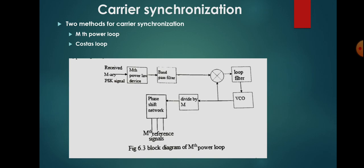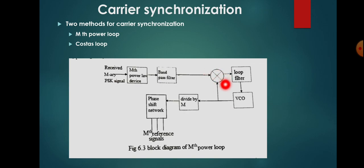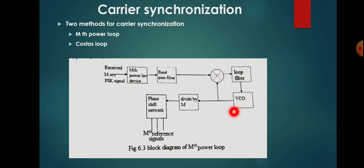Let us discuss first about the Mth power loop. We will be explaining it with the help of an M-ary PSK signal reception. The received M-ary PSK signal is given to the Mth power loop device, then to a band pass filter, then to a phase locked loop. This combination forms the phase locked loop, containing a multiplier acting as a phase detector, a loop filter which is a low pass filter, and a voltage controlled oscillator. The output of the VCO is negatively fed back to the phase detector, forming a negative feedback system.